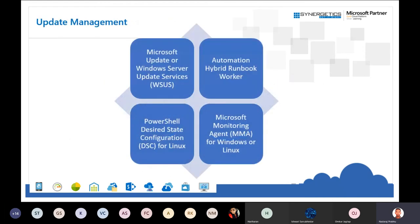Update Management is a service provided by Microsoft to patch virtual machines as well as on-premises machines. Patches can be Windows updates or Microsoft service updates — all can be updated in an automated manner without manual intervention. You can schedule patches, specify which packages to install, and even exclude packages with known bugs. The Hybrid Runbook Worker can automate on-premises machines as well. A monitoring agent shows whether your machine is patched and for how long it has not been patched.